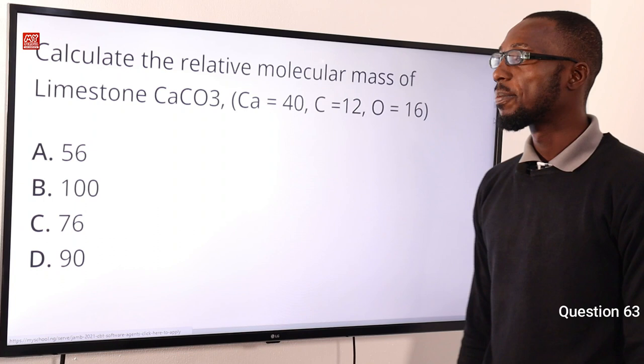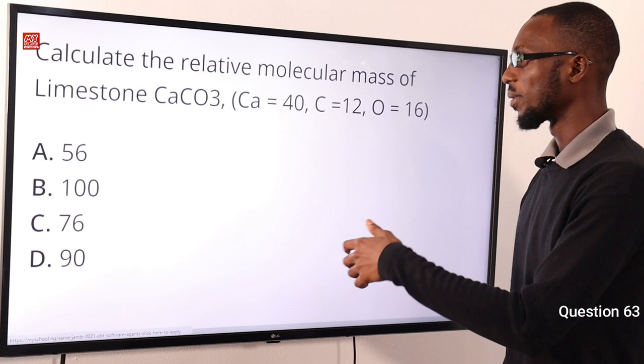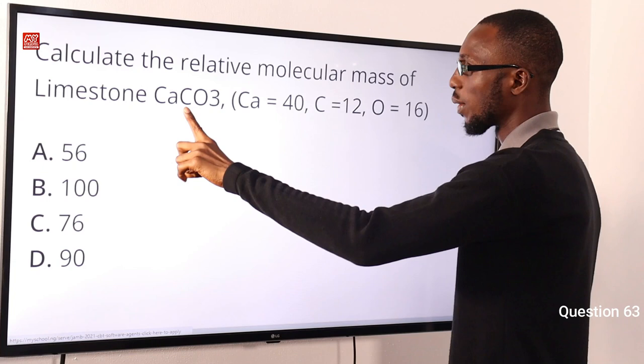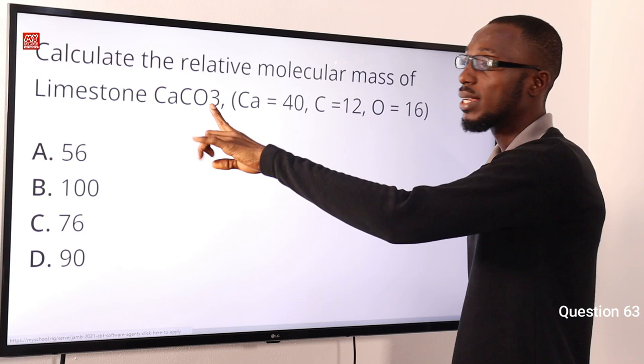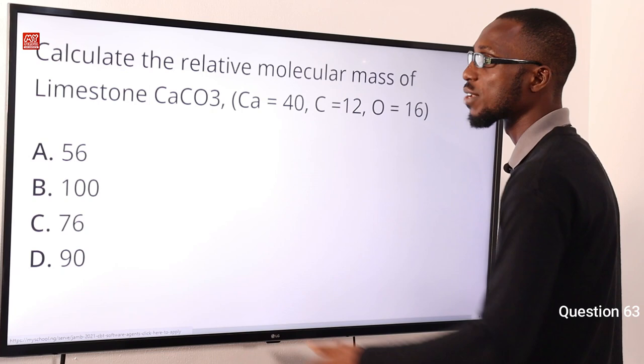Question 63: Calculate the relative molecular mass of limestone, CaCO₃, given calcium as 40, carbon as 12, oxygen as 16. Calcium (40) plus carbon (12) gives 52. There are 3 oxygen atoms: 3 × 16 = 48. So 52 + 48 = 100. The relative molecular mass of limestone is 100 — option B.